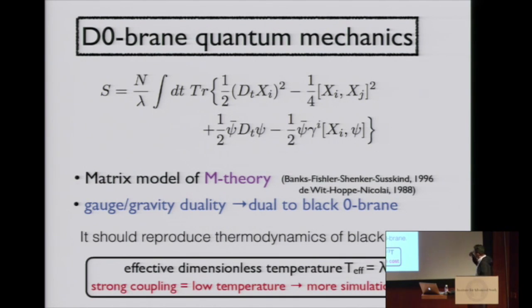In a membrane context, also by de Wit, Hoppe, and Nicolai. In the context of gauge-gravity duality, it should be dual to black zero-brane. It should reproduce thermodynamics of black zero-brane. In this theory, this 't Hooft coupling λ is dimension-full. It has a dimension of mass cubed, so it sets the scale of the theory.